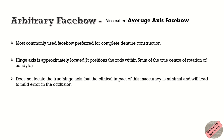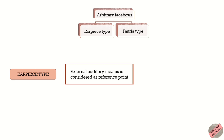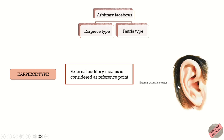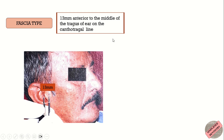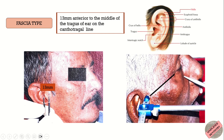Arbitrary face bows are classified as earpiece type and fascia type. In the earpiece type, the external auditory meatus is considered as the reference point to determine the center of condyle rotation. Whereas in the fascia type, the center of condyle rotation is arbitrarily marked as 13 mm anterior to the middle of the tragus of the ear, or on the line drawn from the outer canthus of the eye to the middle of the tragus of the ear, known as the cantho-tragal line.